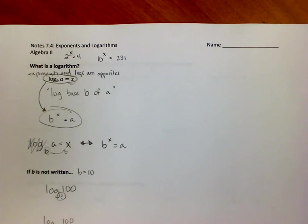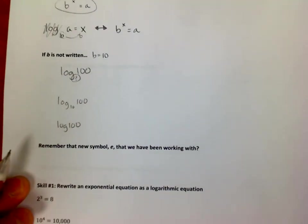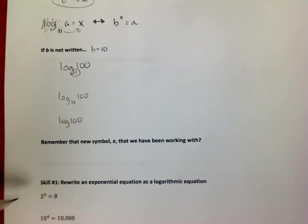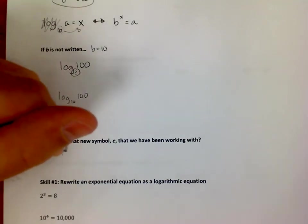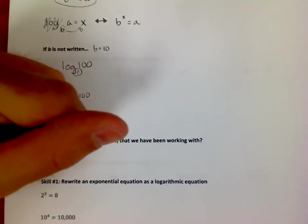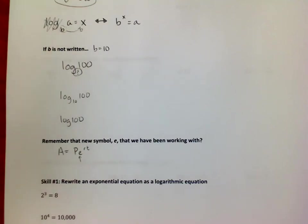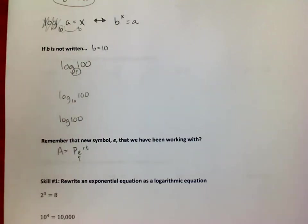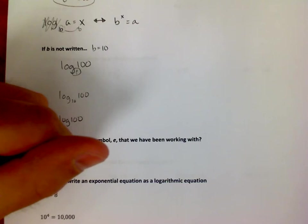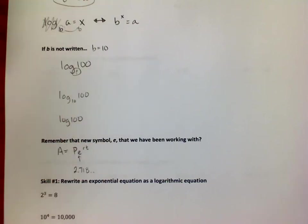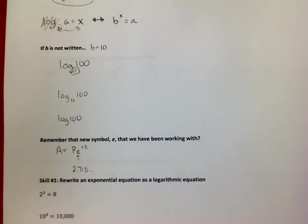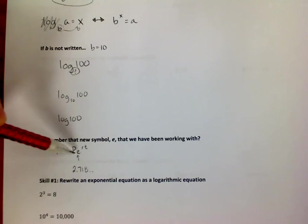One last thing before I get done with this video. Remember that new symbol e that we've been talking about? We've been doing some formulas that had this in it, right? And you had this thing here. I said that's a symbol that shows up so often, it's a number. e is just 2.718 and then that decimal goes on and on forever, it's kind of like pi.